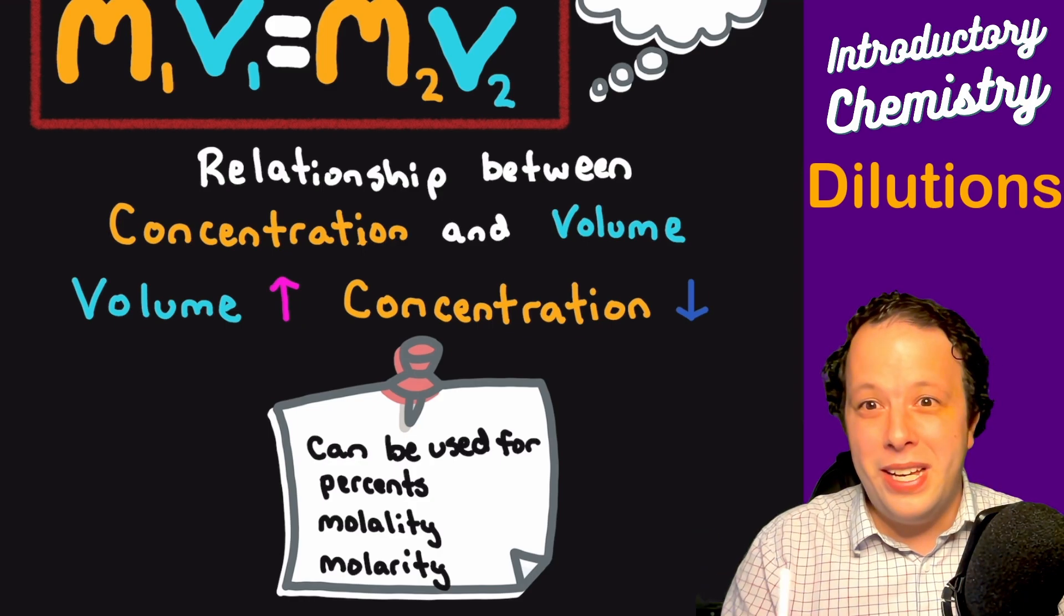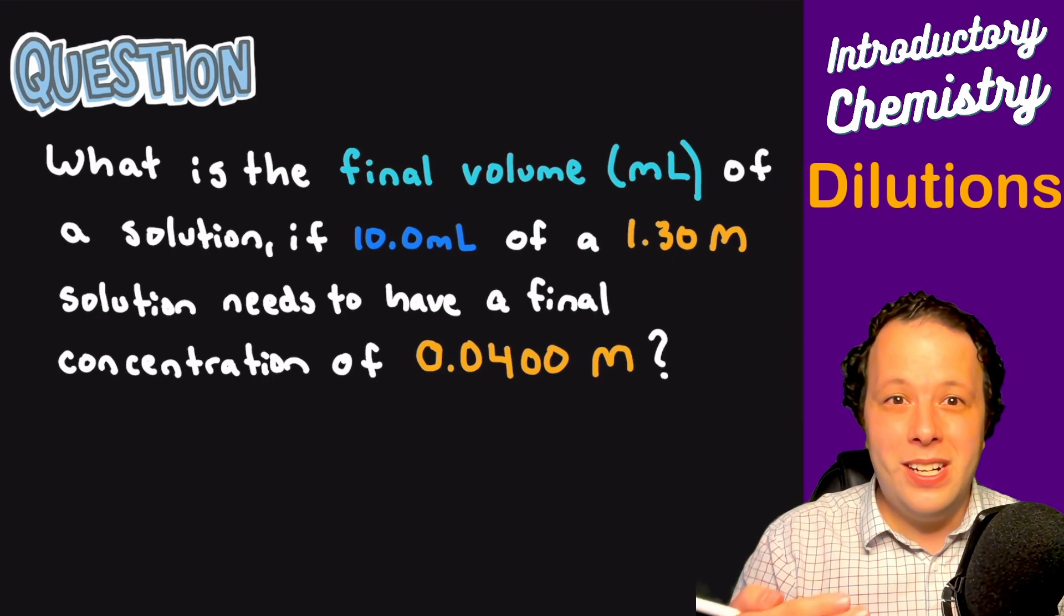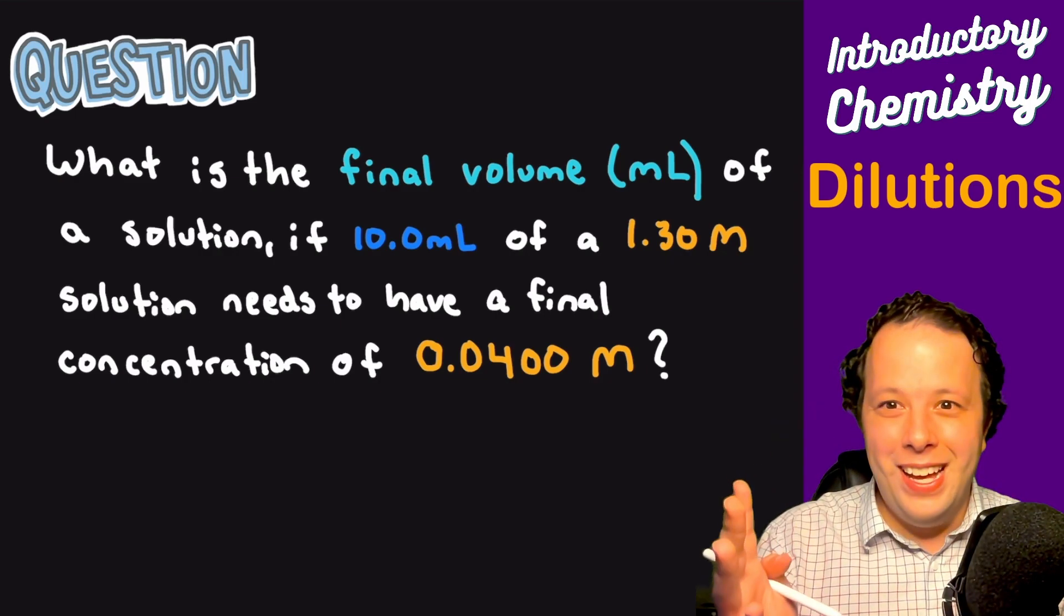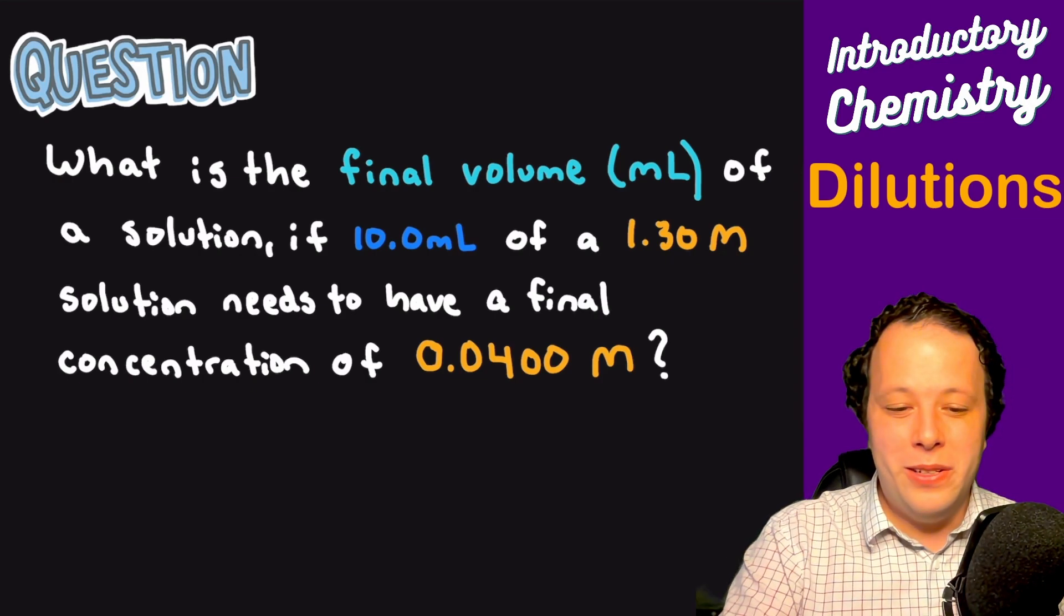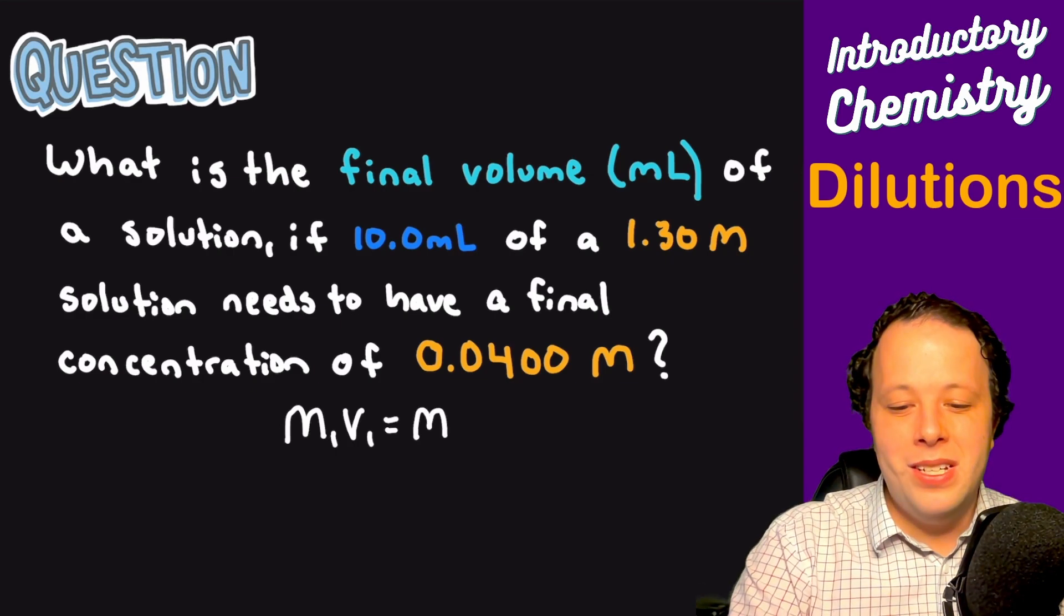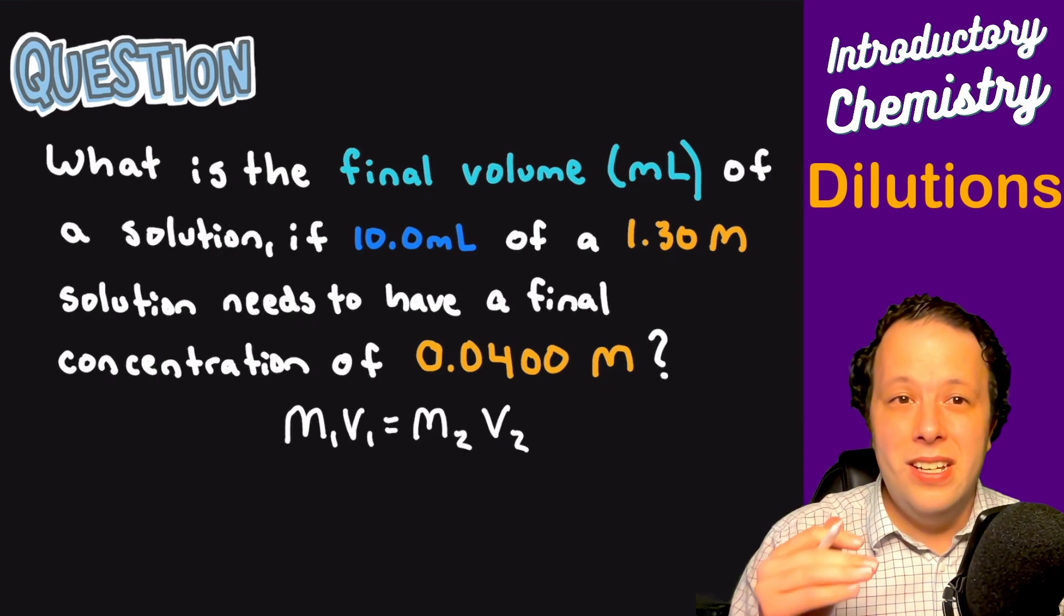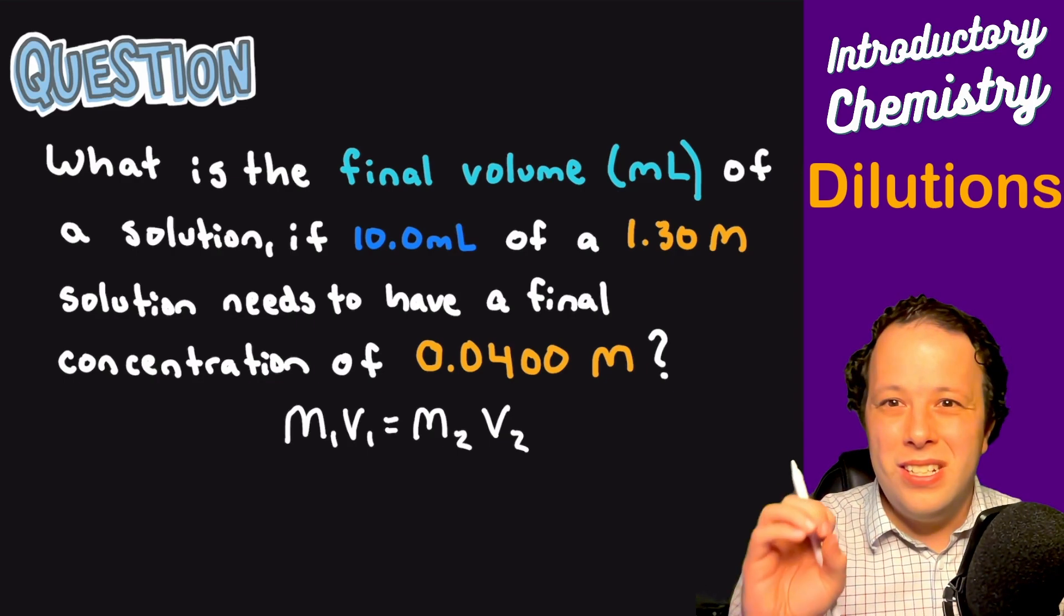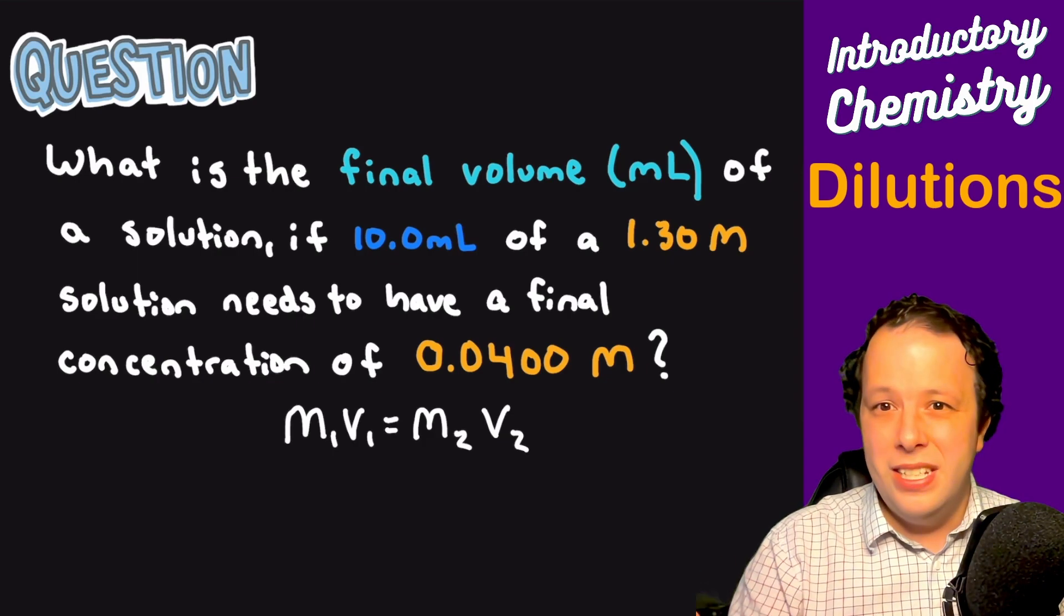Let's look at some examples. A 1.3 molar solution needs to have a final concentration of 0.0400 molarity. What does that even mean? The formula is M1V1 equals M2V2. The first thing I'd recommend is stay organized. It's talking about making a new solution, so you see there's change involved.